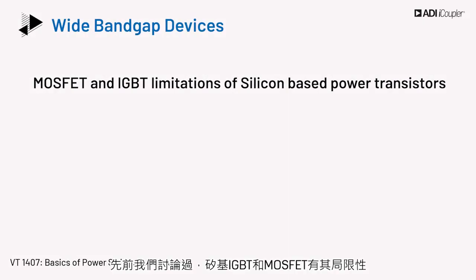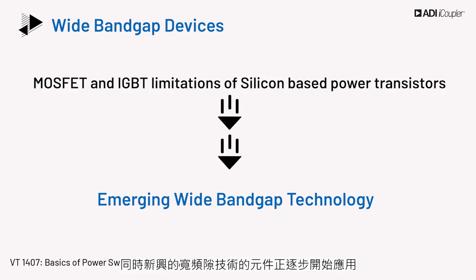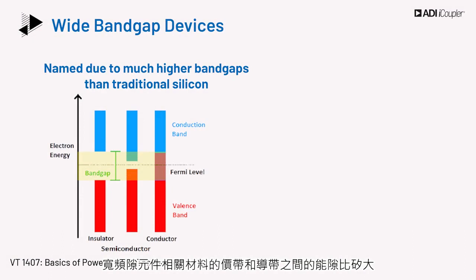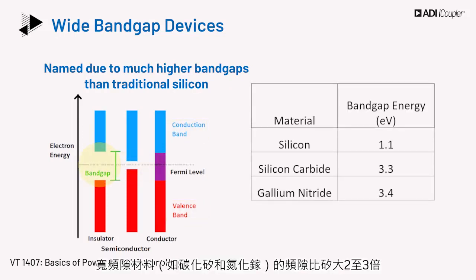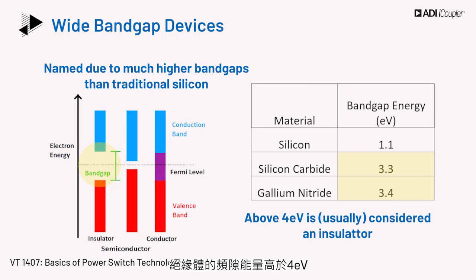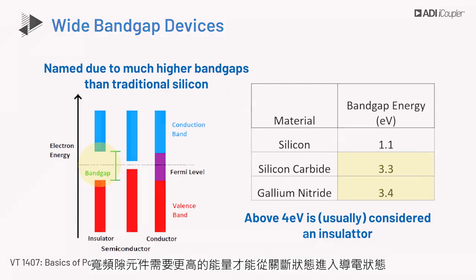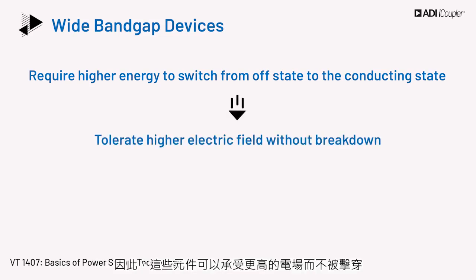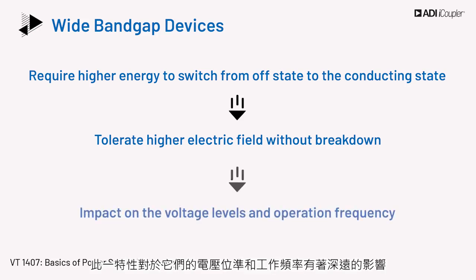Silicon-based IGBTs and MOSFETs have their limitations, and devices with emerging wide bandgap technology are finding application space. The wide bandgap devices are named based on the larger energy gap between the valence band and the conduction band of these materials compared to silicon. Wide bandgap materials such as silicon carbide and gallium nitride have a bandgap which is about 2 to 3 times larger than silicon. Insulators have bandgap energy above 4 eV. Wide bandgap devices require higher energy to go from the off-state to the conducting state, and thus these devices can tolerate a higher electrical field without breakdown. This has a profound effect on the voltage levels and the frequency that these devices can be operated at.